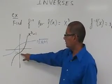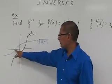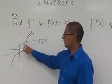And also here is the y intercept on my original function at negative 1. That y intercept becomes the x intercept of negative 1 for my inverse function.